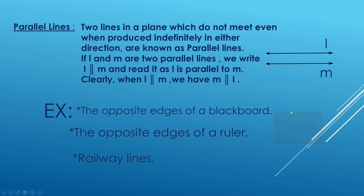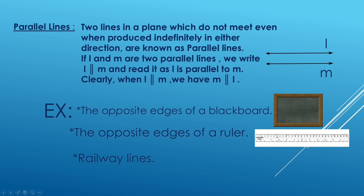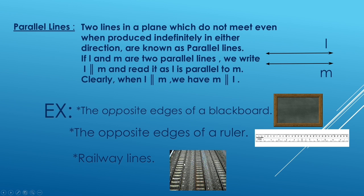Examples of parallel lines: The opposite edges of a blackboard will never meet, so they are parallel lines. The opposite edges of a ruler also will never meet, so they are also examples of parallel lines. Railway lines will never meet, so railway lines are also examples of parallel lines.